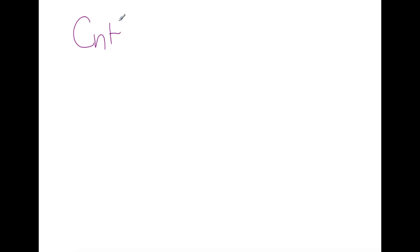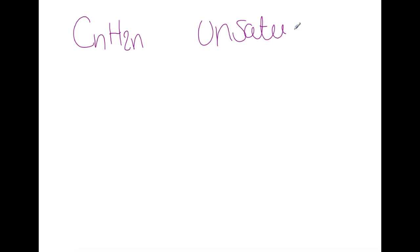Welcome back to the channel. Today we're going to recap the alkene family. The alkene family are a homologous series which has the general formula CnH₂n. They are an unsaturated family and all members of the family contain the carbon-to-carbon double bond functional group.